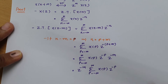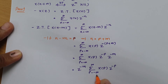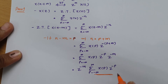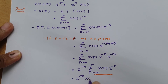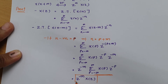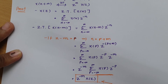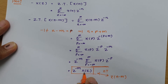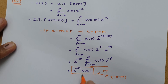So we can say this is z to the power minus m into x of z. So this is what the property which we have proved: the z-transform of the time-shifted version x of n minus m is z to the power minus m into x of z. We have proved this property.